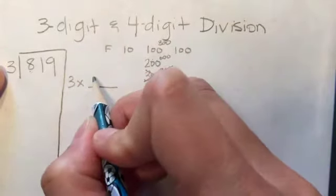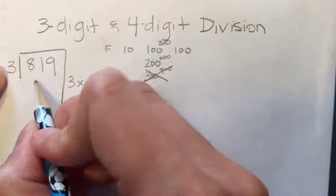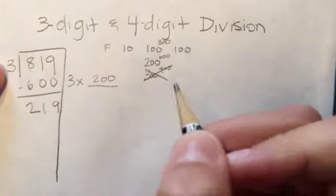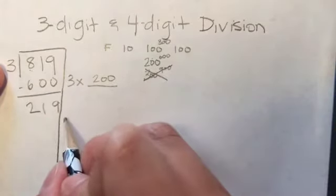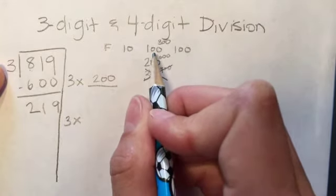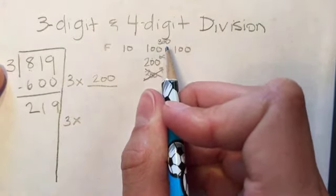So I'm gonna go back and I'm gonna say 3 times 200 equals 600, and then I'm going to subtract and get 219. Now I'm gonna try this again. I'm gonna say, okay, there's something in the hundreds place, so could I do 3 times 100? Well, that's 300, so that's not going to work.